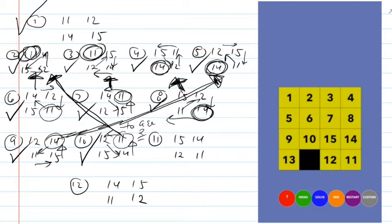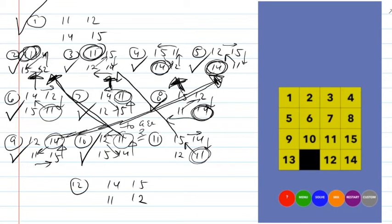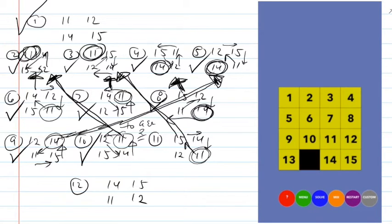Case ten actually turned into case two — not five — after those first five steps. Case eleven: again, eleven and fourteen are both not in their right spots. I could put either one first; I prefer to put the eleven in. With the eleven in place, this turns into case three, so I cycle around the twelve, fourteen, and fifteen. That takes care of case eleven.